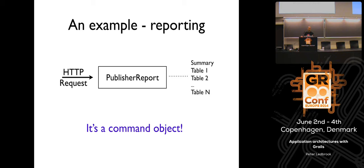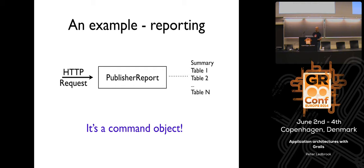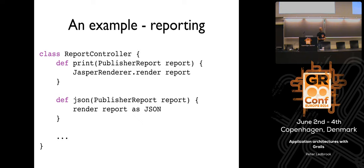The fact is we had not encapsulated the idea of a report into our model — we just had controllers, services, and a domain model. So a different approach was taken: each HTTP request contains the query parameters for a report, and that is used to populate a new object called a publisher report. When you ask the publisher report for its data, it does the appropriate querying and handles the pagination. In Grails' world, it looks like a command object — but rather than an anemic command object, we add behavior to it. This is one solution to Martin Fowler's complaints about the anemic domain model. The controller becomes very thin: use Jasper Renderer, ReportAsJson, or generate HTML from the report object. Things become a lot easier.